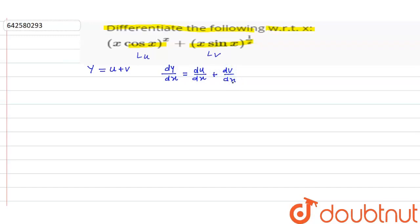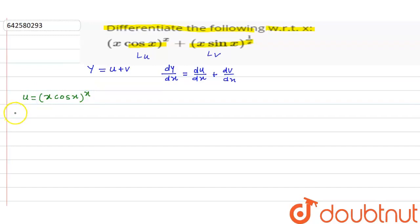We need to find du/dx and dv/dx and add these two. So for du/dx, let's take the function u. u is equal to x·cos(x) to the power x. If we take log of both sides, we get: log u = x·log(x·cos x).